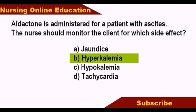Diuretics increase urine output. Potassium-sparing diuretics retain potassium while promoting water and urine output. Aldactone, or Spironolactone, is administered as a potassium-sparing diuretic, so it can cause hyperkalemia.